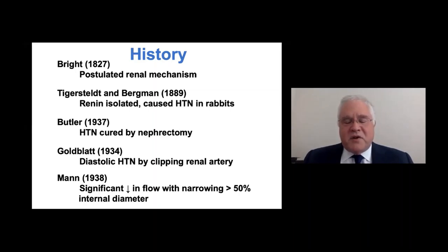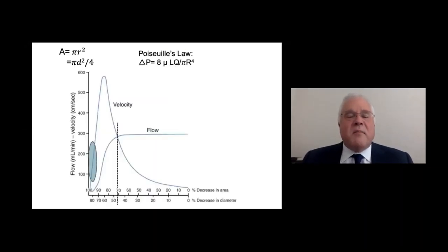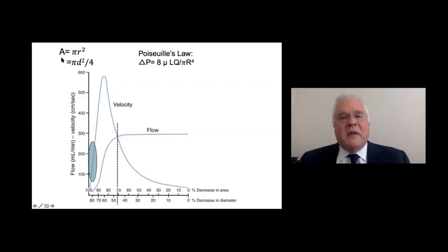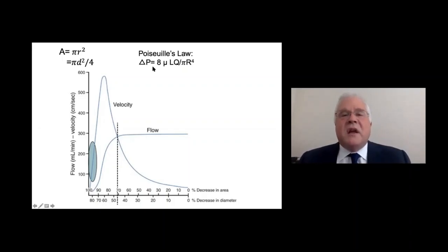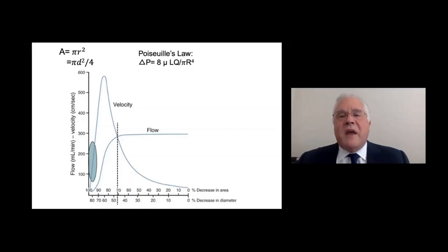Also in the 1930s, Mann showed that you didn't get a significant decrease in flow through the renal artery unless you had a narrowing over 50% of internal diameter. I want you to remember two equations. First: the cross-sectional area of a tube is directly proportional to the square of the radius, or the square of the diameter divided by 4. Second: Poiseuille's law describes the change in pressure gradient across a tube — in this case an artery — and this is inversely proportional to the fourth power of the radius. So the smaller the diameter, the greater the pressure gradient.